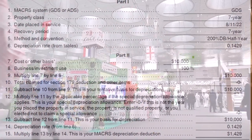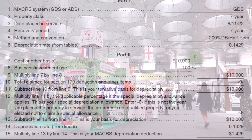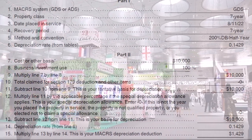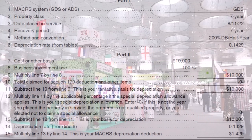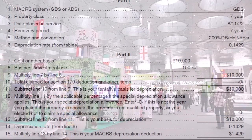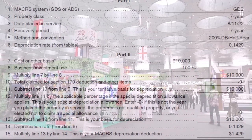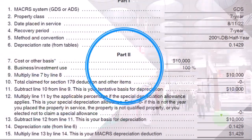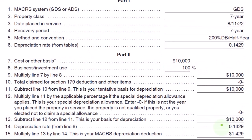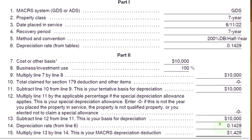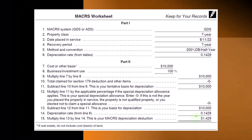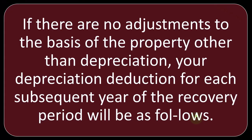Cost or other basis: $10,000. Business percent is 100%, so $10,000. No Section 179 deduction, so still $10,000. No special depreciation allowance, still $10,000. Multiplying that times 0.1429 gives us $1,429 for year one — that's your MACRS depreciation deduction.